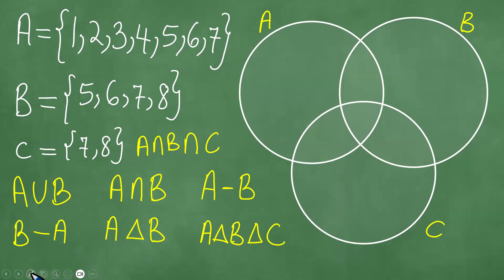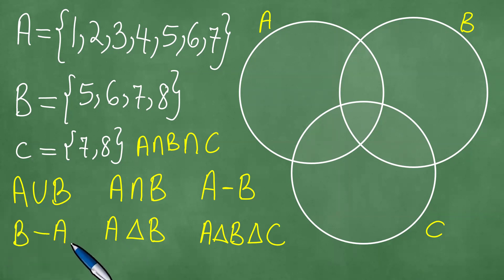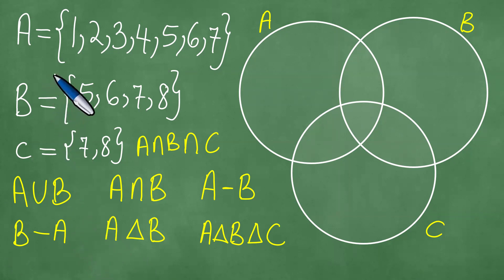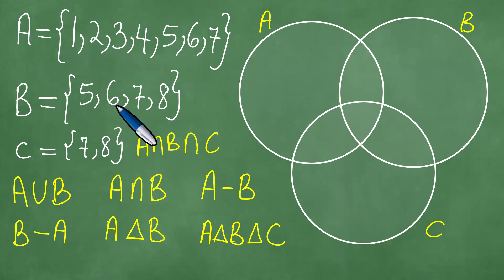We are here looking at Venn diagrams. Venn diagrams are important to us and we're looking at three sets A, B, and C. Set A contains the elements 1, 2, 3, 4, 5, 6, 7. B contains the elements 5, 6, 7, 8. C contains the elements 7 and 8.